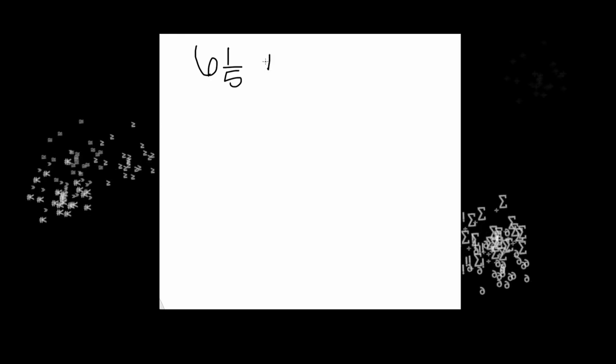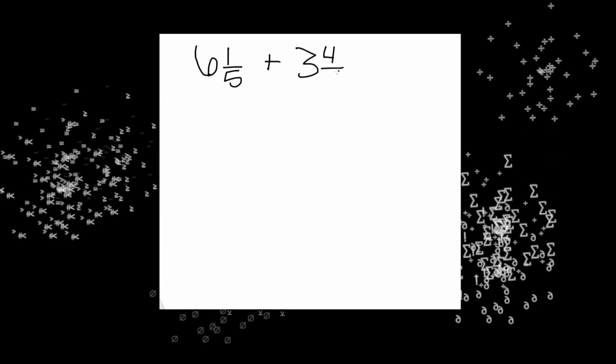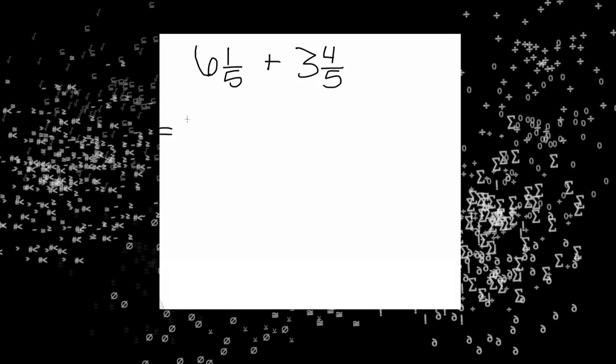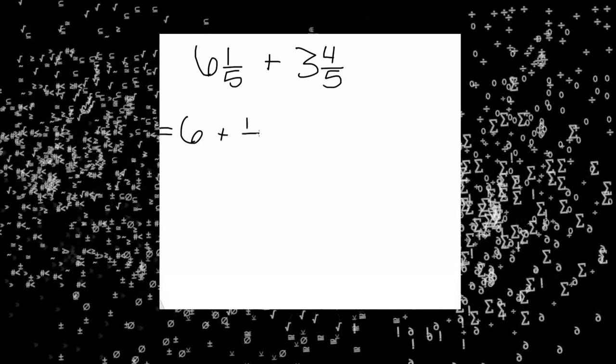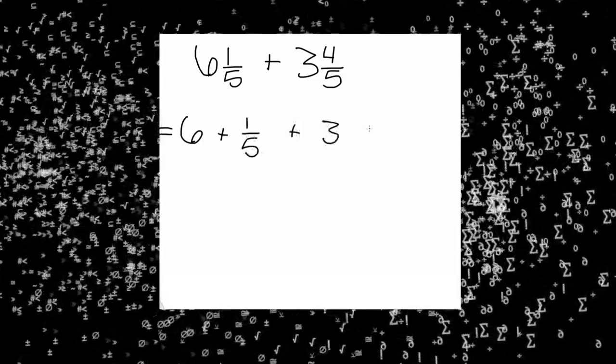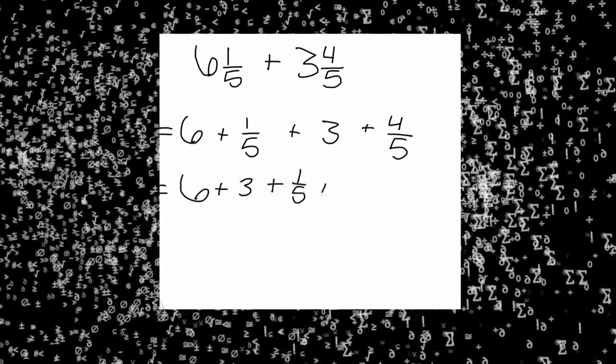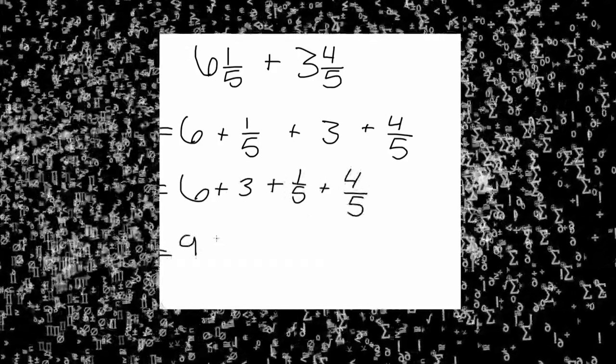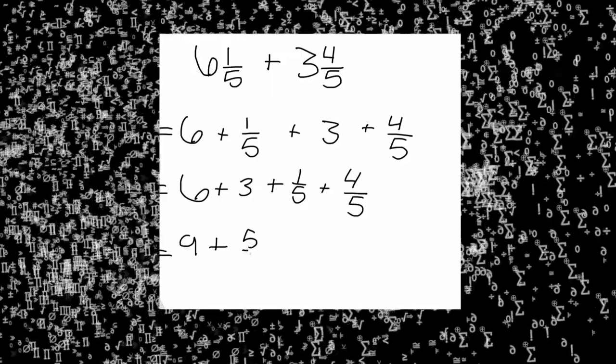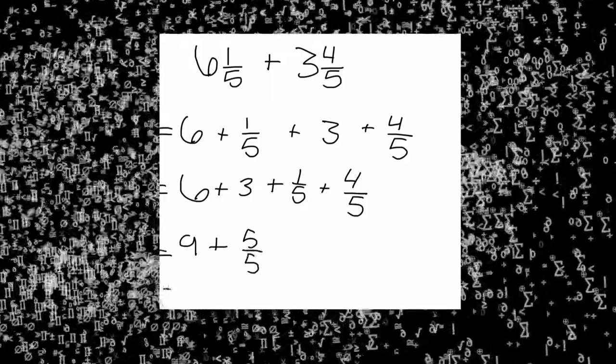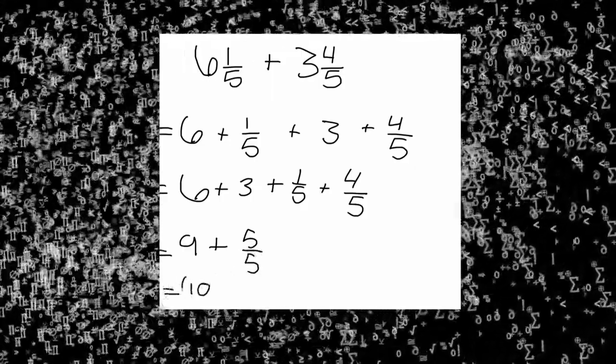Another way you can simplify the expression six and one-fifths plus three and four-fifths is by decomposing. First write down the expression. Next decompose it. It will become six plus one-fifths plus three plus four-fifths. Add the whole numbers six and three to get nine. Add one-fifths and four-fifths to get five-fifths or one. Add those together to get ten. This method is faster than drawing an open number line but not as visual.